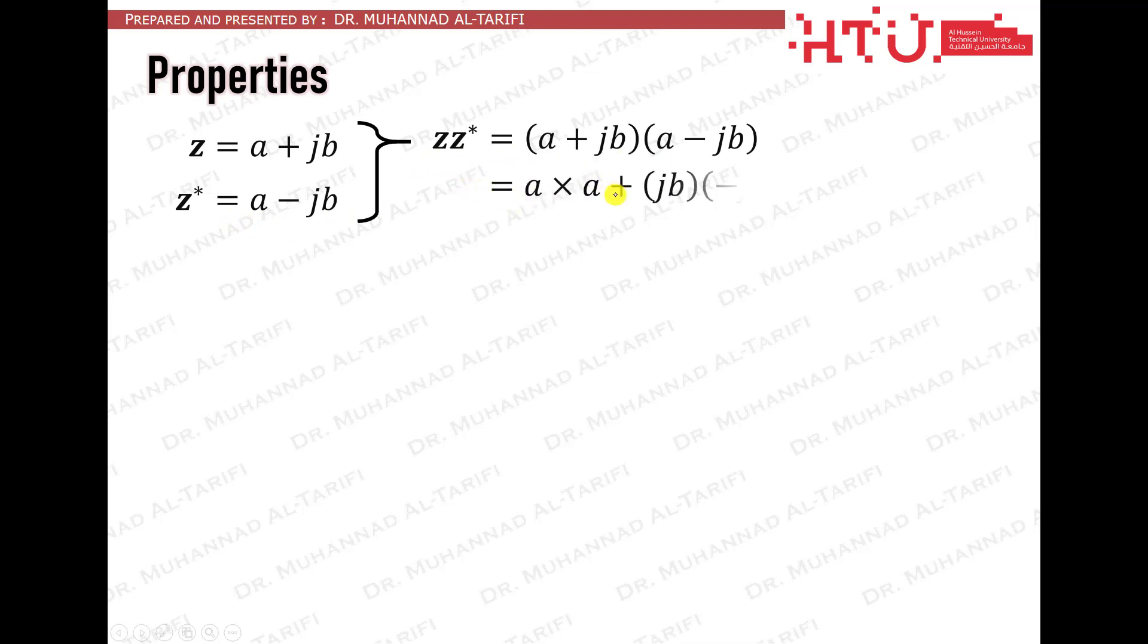To confirm the main property of conjugates, let's multiply a plus jb with its conjugate a minus jb. a times a is a squared, jb times minus jb is a positive b squared, and a times minus jb and a times plus jb cancel each other. So the final outcome is a squared plus b squared, a purely real number with zero imaginary parts.